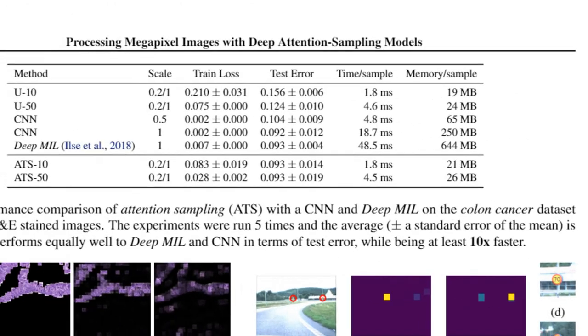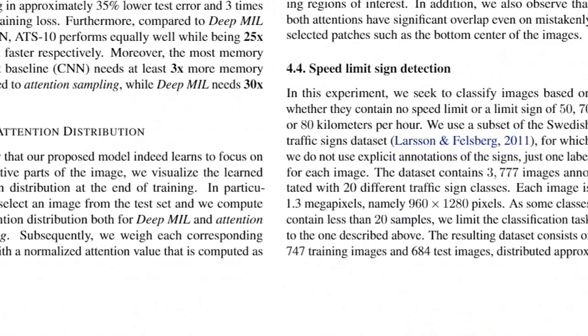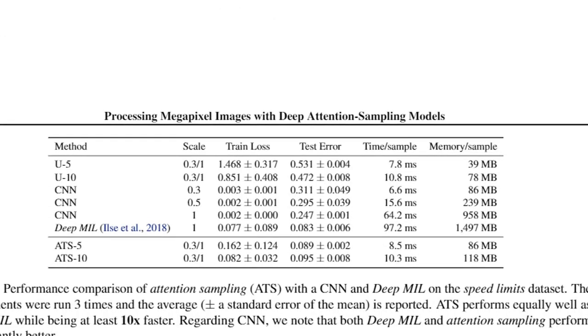So here you see the baseline performance, the attention sampling performance is similar in terms of test error. But if you look at how much time the baseline uses per sample and how much memory, and then compare this to the attention sampling, you see that they save at least an order of magnitude in time and memory. And the same thing goes for the street sign dataset. You see test error here, and then test error is similar for the attention sampling, but again time and memory much much lower.